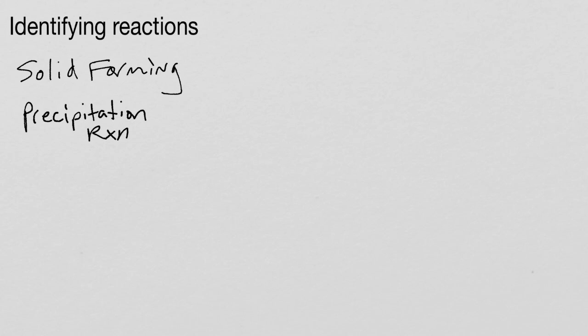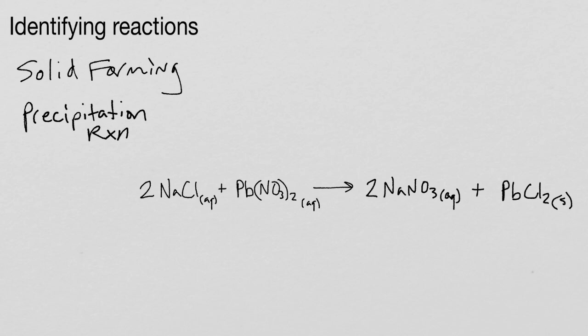So let me give you an example of a precipitation reaction. Something like 2 sodium chloride plus lead nitrate, or lead 2 nitrate, and we get 2 sodium nitrates, and lead 2 chloride, and it's a solid.